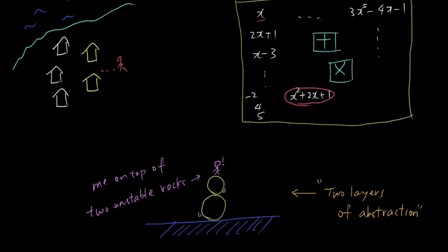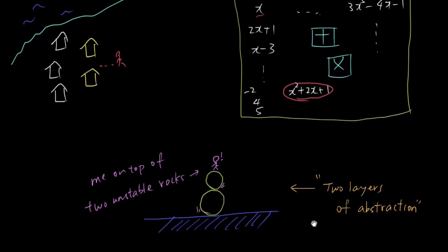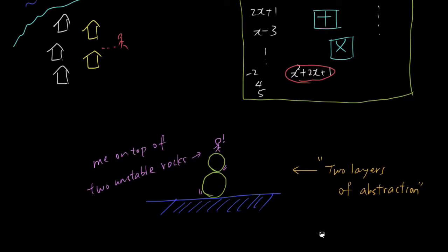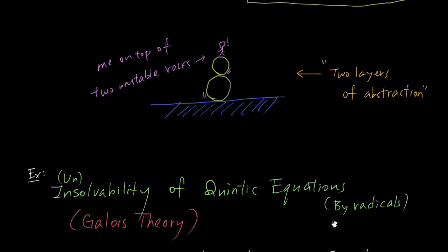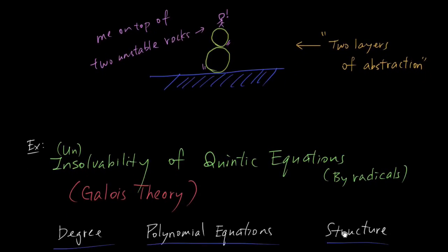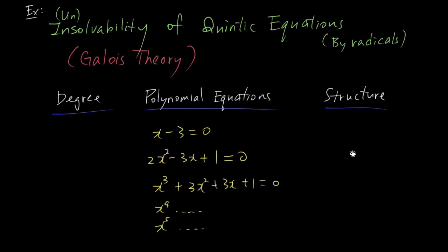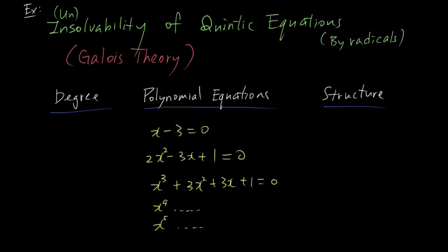So this begs the question, how is this ever going to be useful? To demonstrate its power, I'm going to try to describe a classic problem called the insolvability of quintic equations. This is a topic called Galois theory. Trivia time. Galois is a Frenchman back in the first half of 1800s. He got into a duel at age 20 and died. Pretty crazy story.